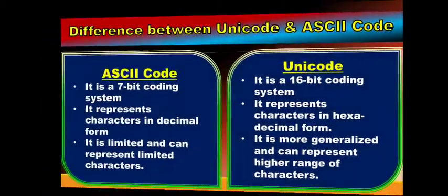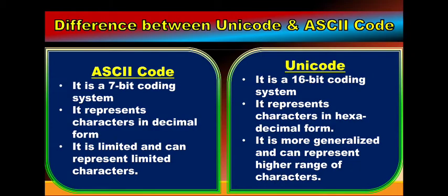Next is the difference between Unicode and ASCII code. Before going into the difference, why is a coding system needed? Basically, computers understand only binary form — that is 0 and 1 — but human beings understand alphabets, digits, and symbols. To make the computer understand our language, a coding system is needed. ASCII code was invented by IBM, which is a 7-bit coding system, meaning it can represent 2 to the power 7, that is 128 unique characters.